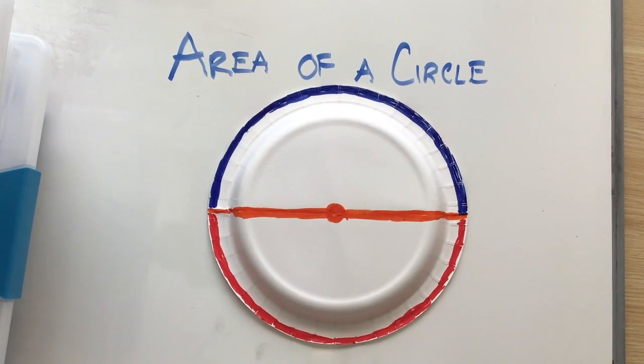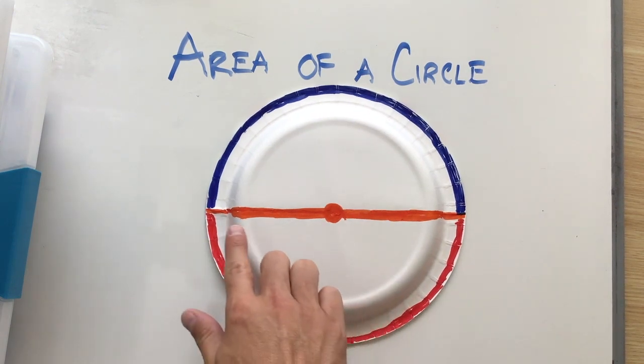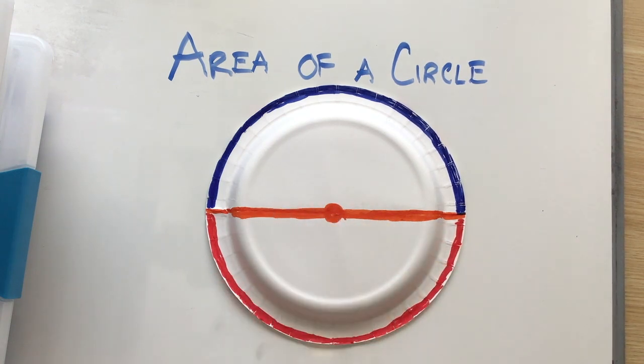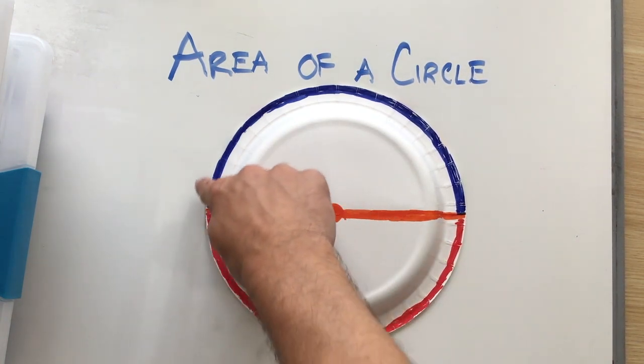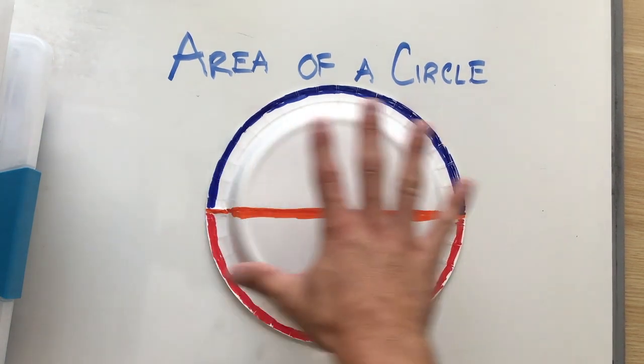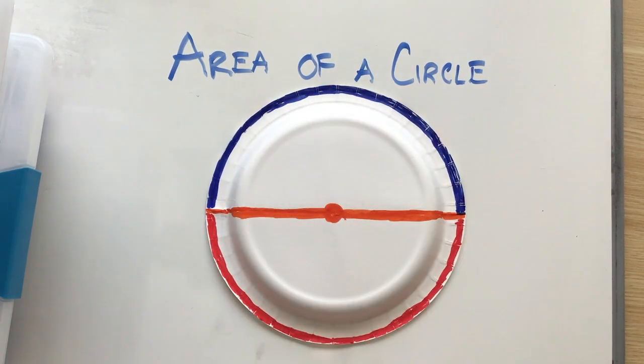So today we're going to learn where the area of a circle formula comes from, and you can follow along at home by using a paper plate. What I've drawn on my paper plate is my diameter, which is made up of two radiuses. I've also drawn my circumference in two different colors, so I've got two half circumferences. And the area is the space that the plate takes up.